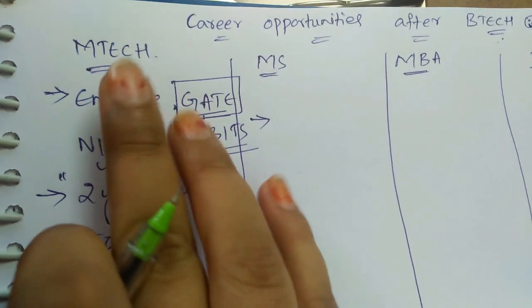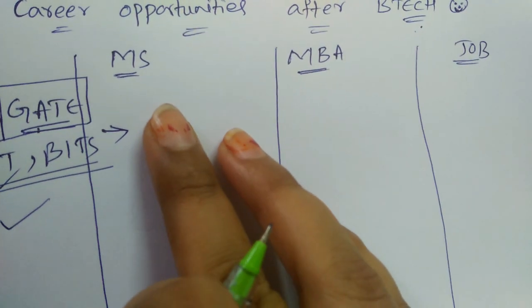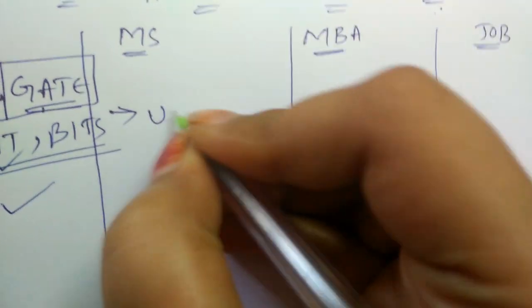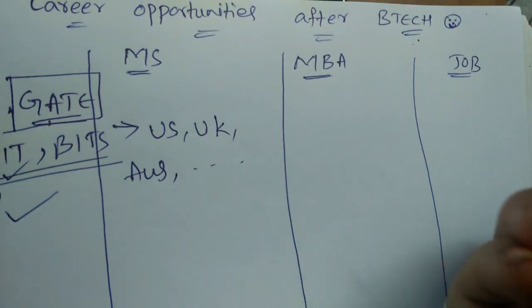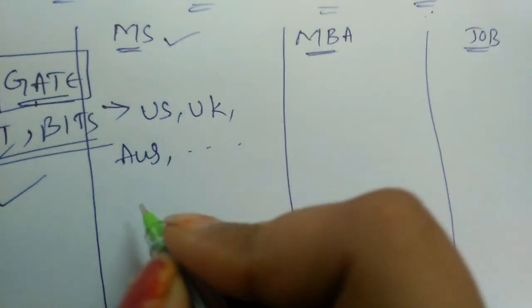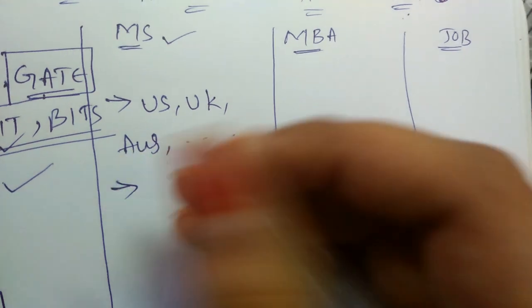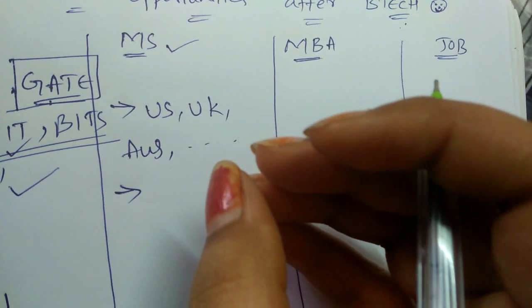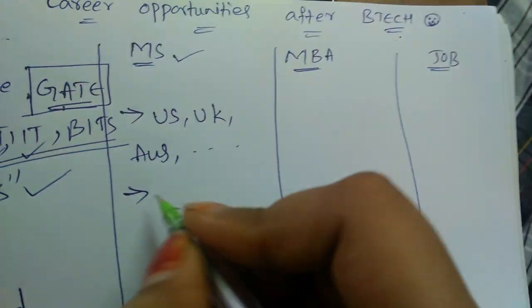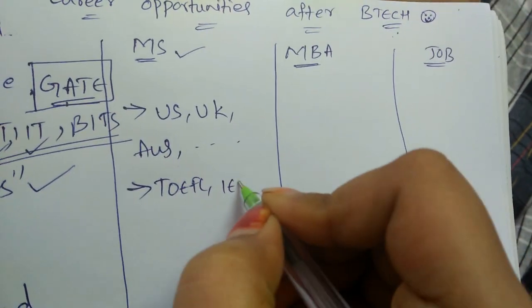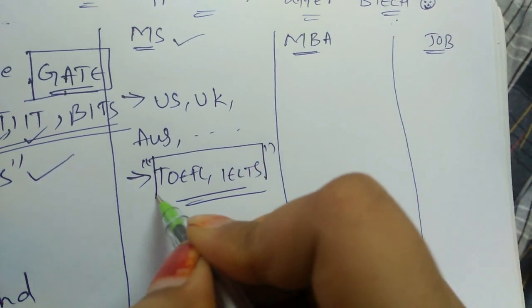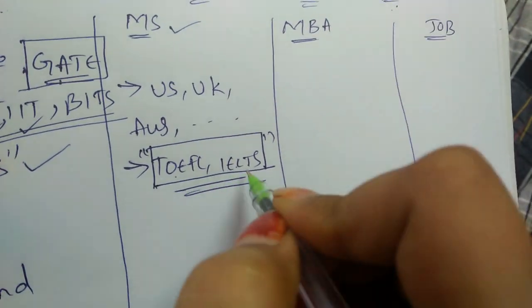Coming to the second option which is MS, students need to go to the foreign universities in order to pursue MS such as US, UK, Australia like such kind of foreign places. For MS, entrance exams will be different based on your university. Entrance exam will be different from one university to another. But you must write the TOEFL as well as IELTS because it is the foreign university. These both exams are must. These are for English entrance communication proficiency.